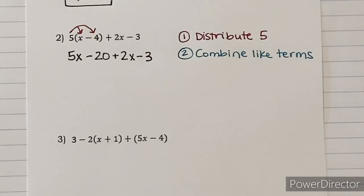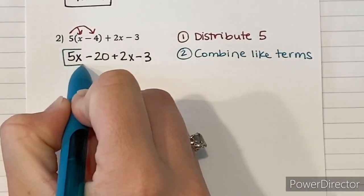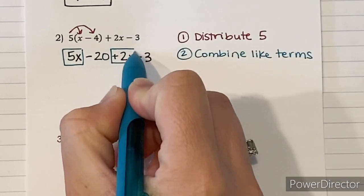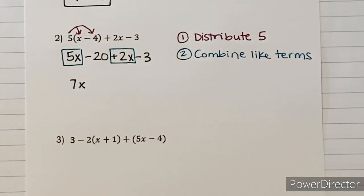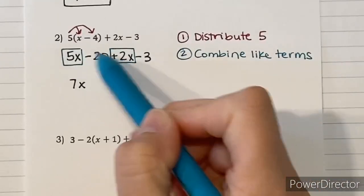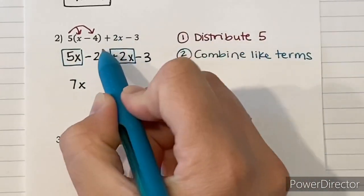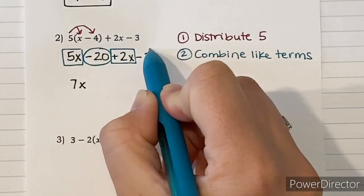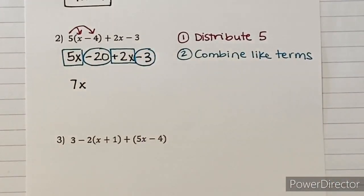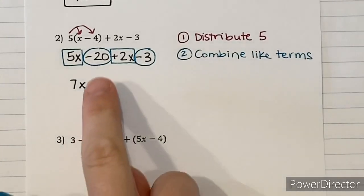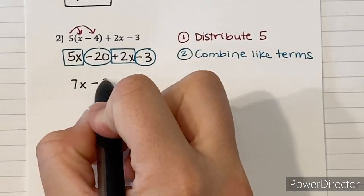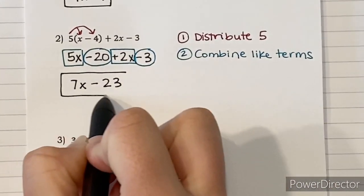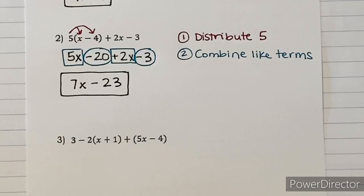When combining, x's always come first. I'll mark the like terms with shapes to make it easier to see what combines. I have 5x plus 2x, which gives me 7x. Then I have negative 20 minus 3, which is minus 23. So the simplified expression is 7x - 23. Simple as that!